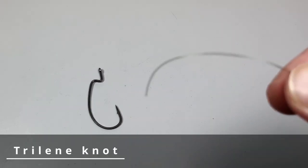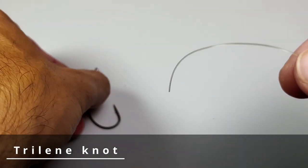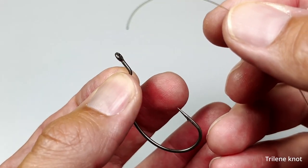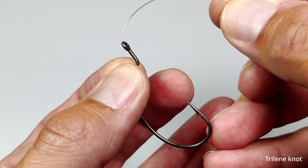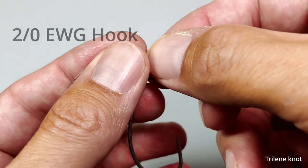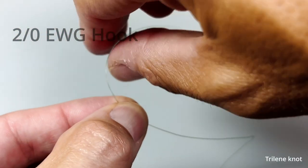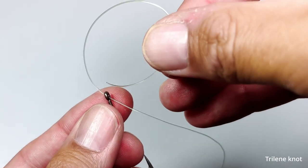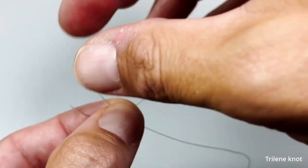We'll start with my favorite, the Trilene knot. You first pass the tag end through the eye of the hook. You pull enough line to make a loop, then you pass the tag end through the eye again.